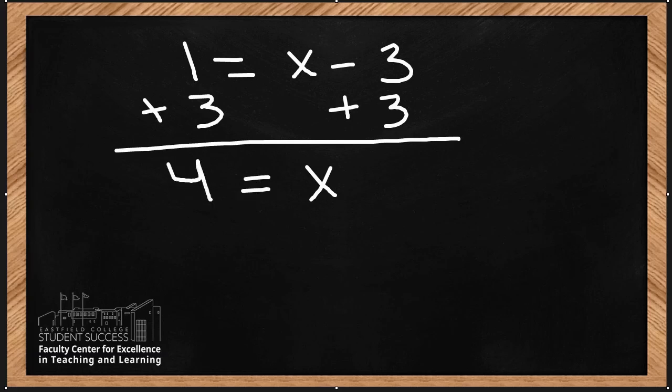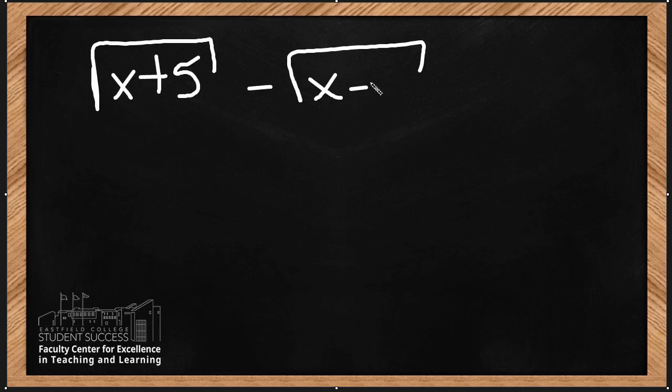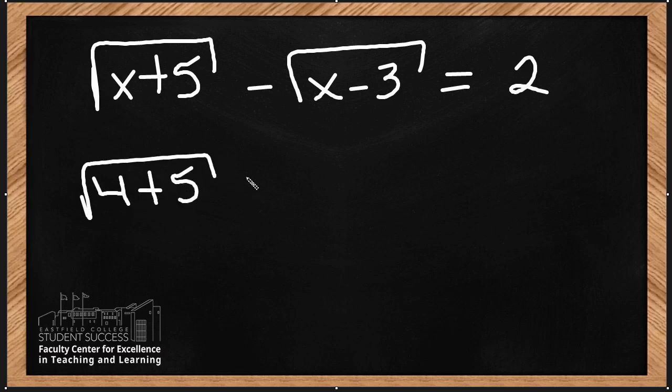The whole point of a radical equation is that we have to make sure and check our solution to the original problem, just because we might produce extraneous solutions. So here is the original problem again, and I'm going to substitute 4 into our x - so that's our possible solution, I should say.